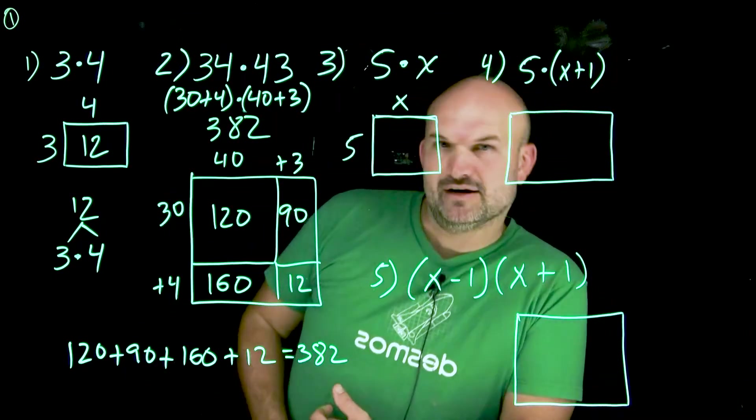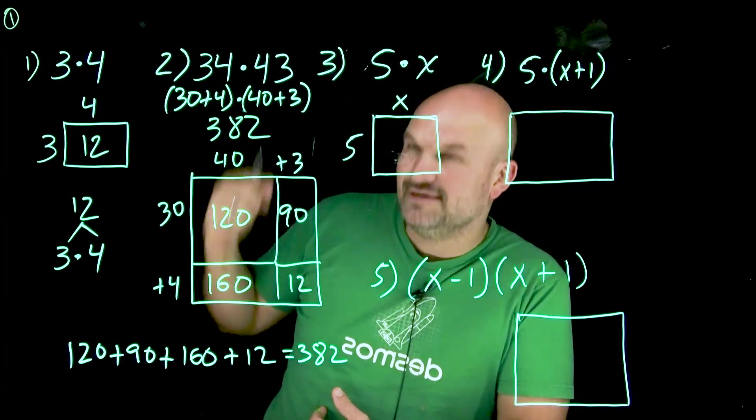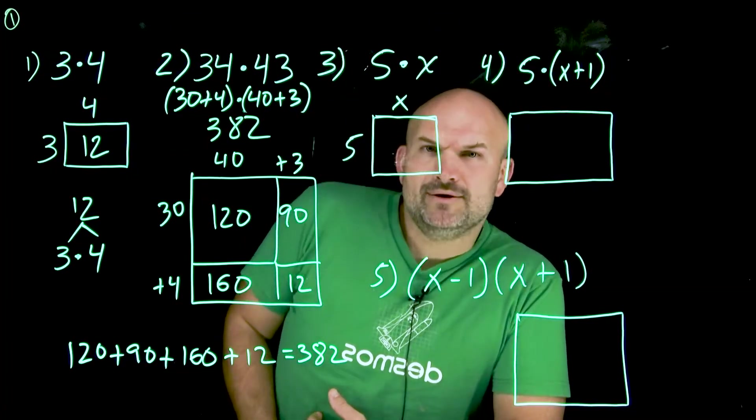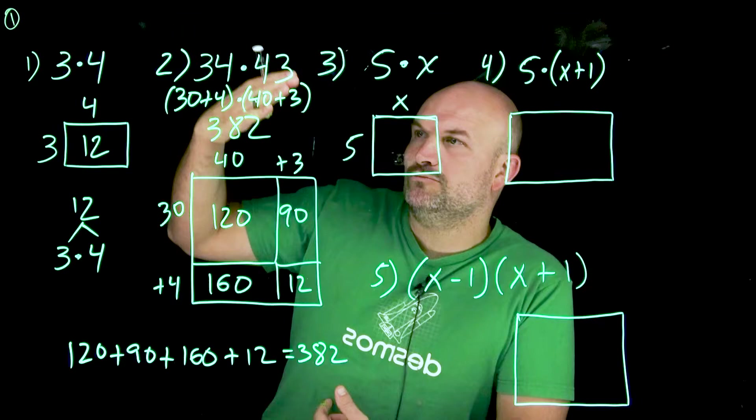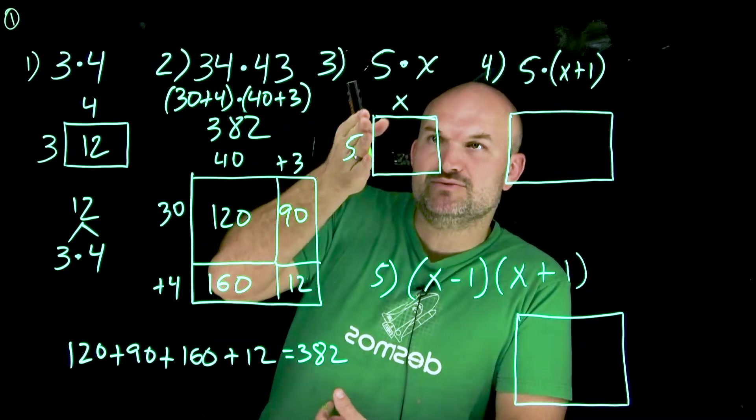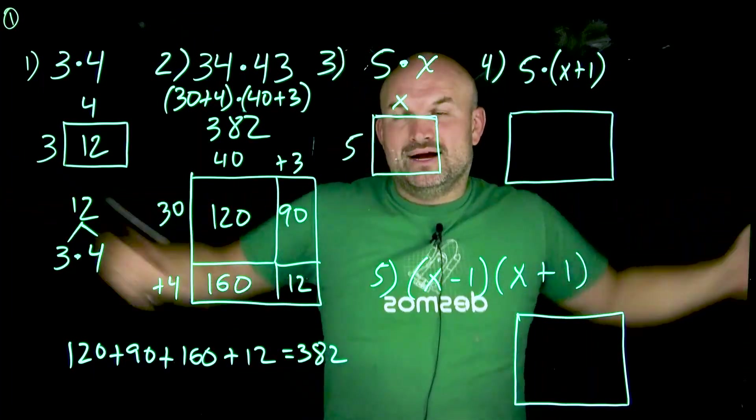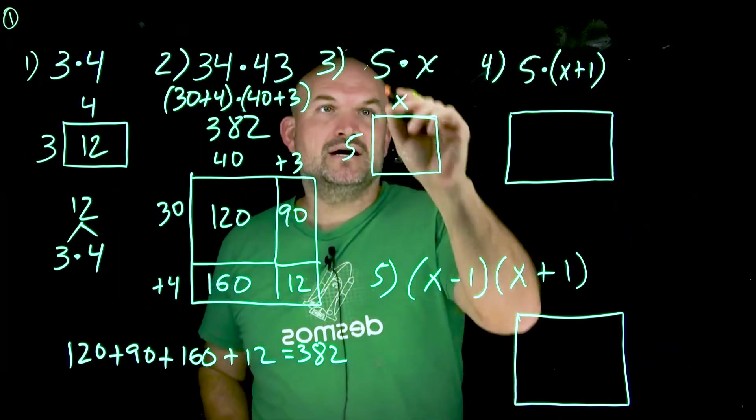So what about when we have something we can't visualize? We can't see because we don't know what the value is. What about when we have like a variable X? Now, again, you could use anything A, B, C, Y, Z, W. What do we do? Well, we're just going to follow the same rules that we did with numbers and we're just going to represent it. It's just going to be a little more abstract because we don't know how big X is. X can be a fraction. It can be one half or it can be 10,000, right?